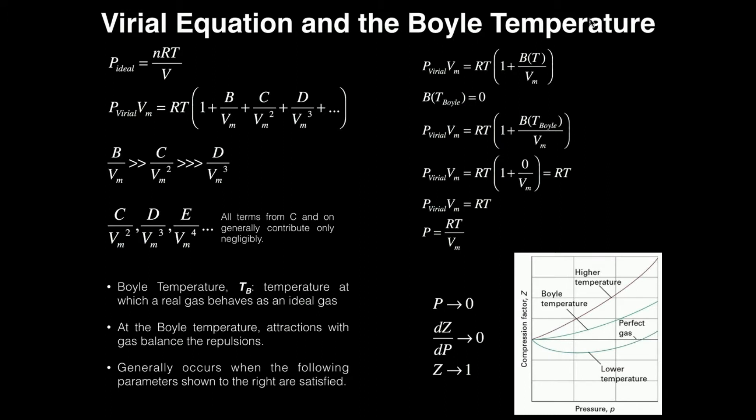So what is the Boyle temperature? The Boyle temperature, which we normally abbreviate T sub B, is the temperature at which you can treat a real gas as an ideal gas because the behavior is similar enough to that of an ideal gas.